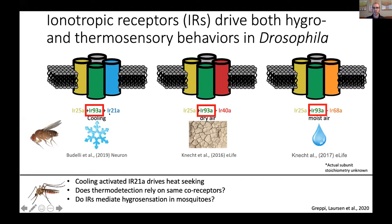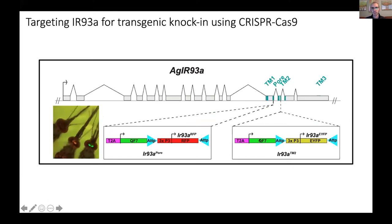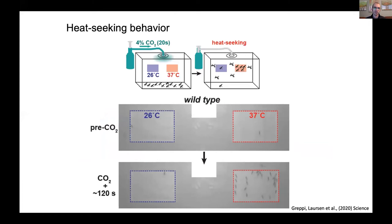We know that temperature-detecting pathways are conserved in mosquitoes, and we're interested in whether similar ionotropic-based mechanisms might mediate humidity detection. We chose to focus on the broadly expressed co-receptor IR93A, because targeting it would let us test its involvement in humidity detection and, if confirmed, knock out all these modalities simultaneously — giving us the opportunity to dissect the role of short-range cues in complex multimodal behavior like host-seeking and blood feeding. We used CRISPR-Cas9 to make targeted insertions into different regions of the gene, giving us marked alleles and genetic access to IR93A-expressing neurons via the QUAS system.